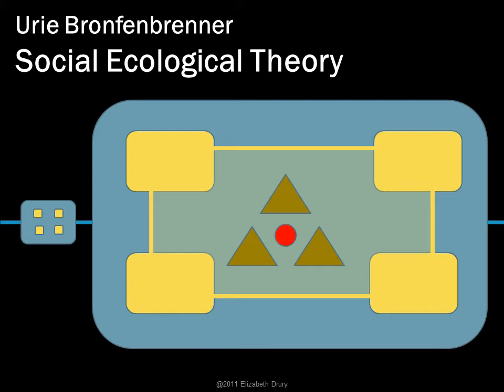The child is surrounded by a micro-system — think of that as the little triangles. That would be the home environment, the school environment, maybe the neighborhood the kid plays in — the most immediate, common context for this kid. Then, at the next layer out, where the rectangles are, this would be all the social institutions, realities, and patterns of thought that would influence the micro-system.